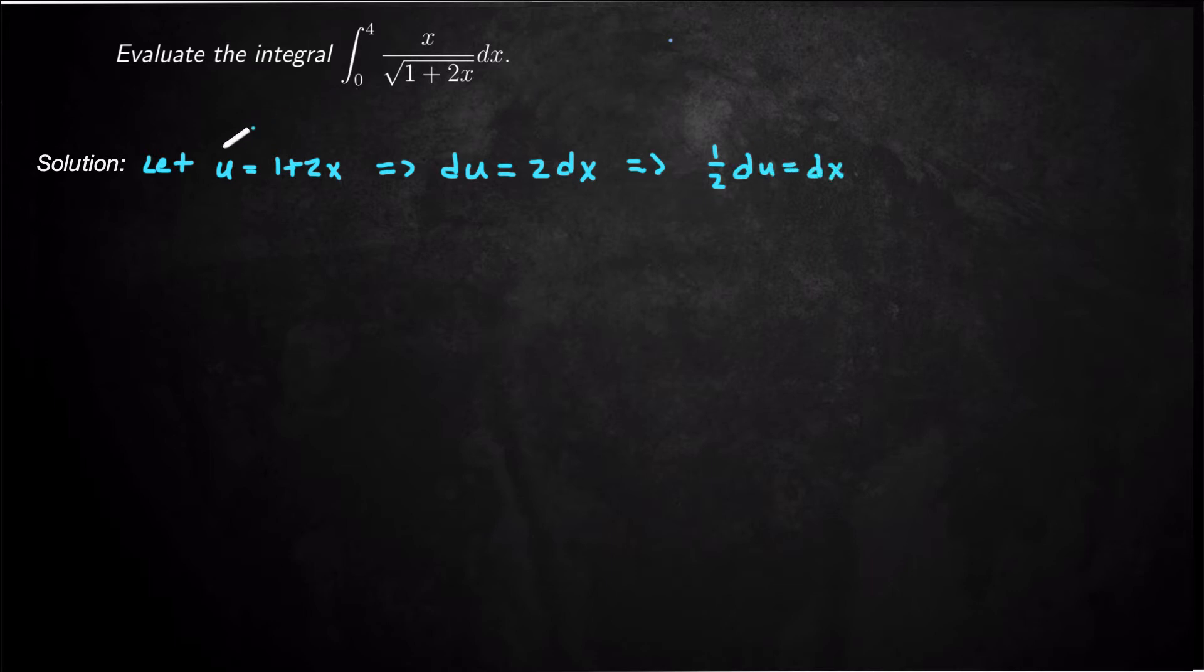So I'm gonna make that substitution in my integral, but so that'll give me 1 over square root of u times 1 half du, but I still have this x term right here. That's not being absorbed into du. It's not being absorbed into my integrand substitution anywhere.